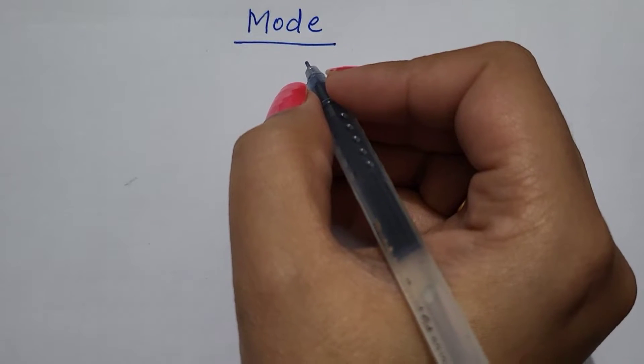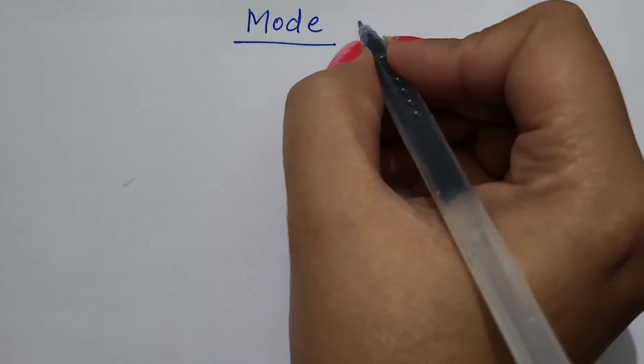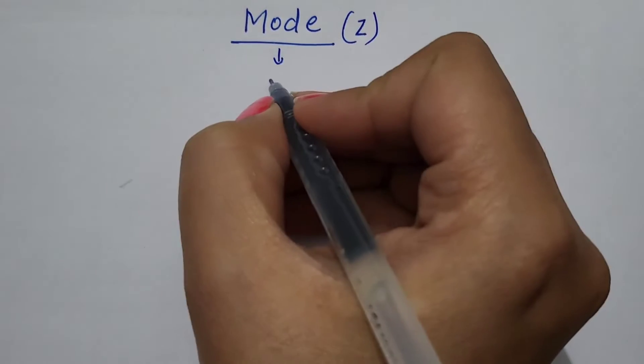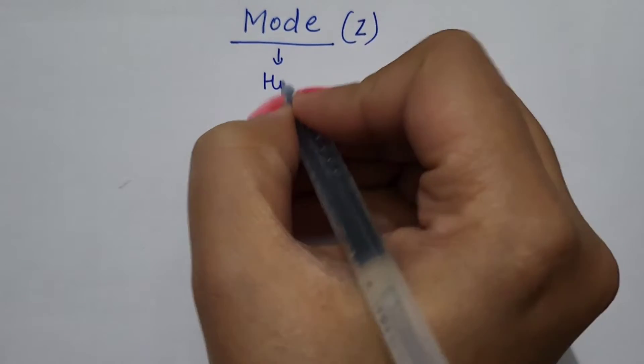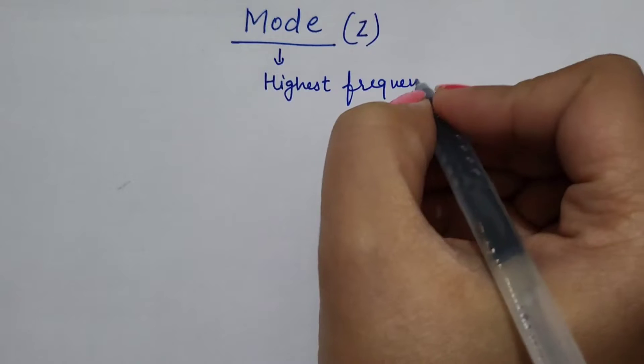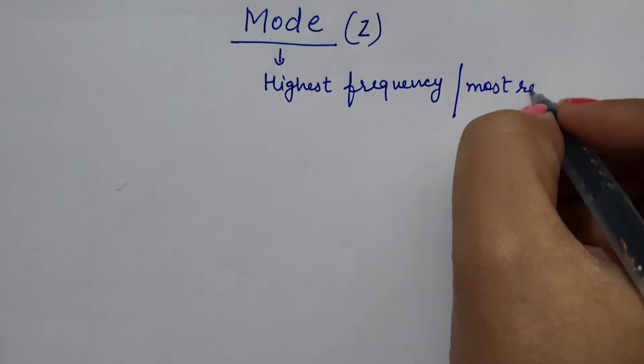Hello students, welcome to NV Commerce Academy. Our today's topic is mode. Mode is denoted by Z.